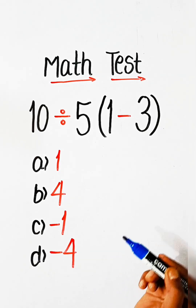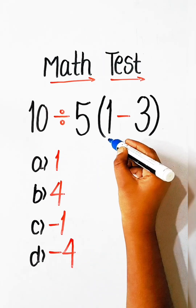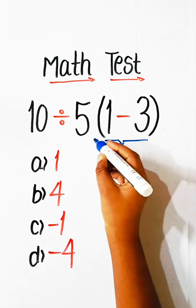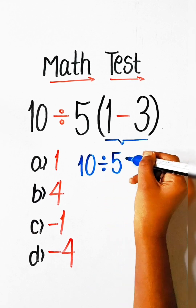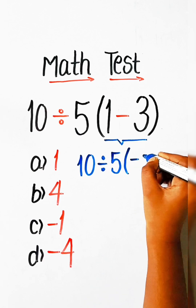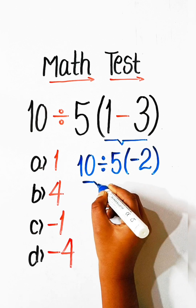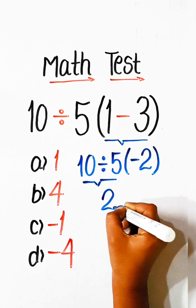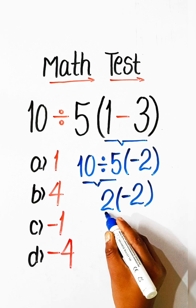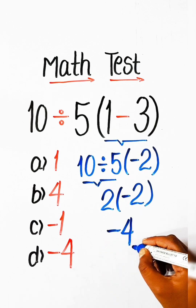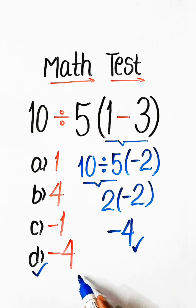So let's solve this. According to BODMAS, we solve the bracket part first. We write 10 divided by 5, and 1 minus 3 is minus 2. So we get 10 divided by 5, multiplied by minus 2. We divide first: 10 divided by 5 is 2, then 2 multiplied by minus 2 gives minus 4.